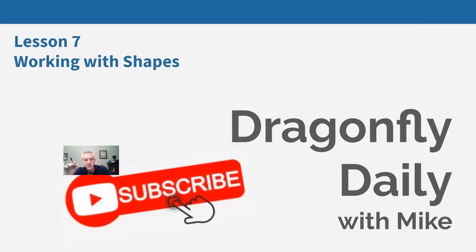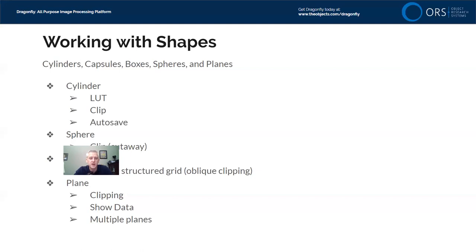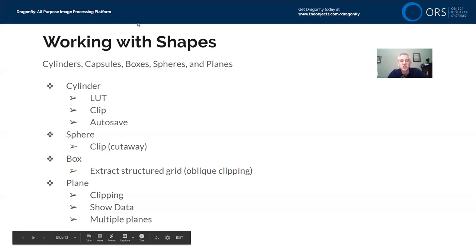If you are watching on YouTube, hit that subscribe button so that we can keep these active and continue to do more webinars. Lesson seven, working with shapes. We'll be using Dragonfly 4.1 today. We're no longer using the out-of-the-box experience — we're now using the customizations applied in lesson six. So if Mike's interface looks different from yours, it's because of those customizations: changing the background color, changing the workspace where you have modules in different places.